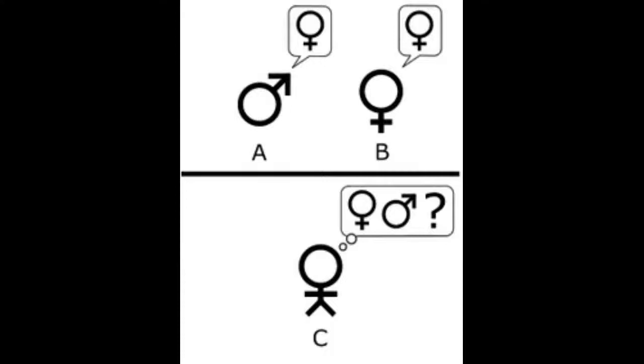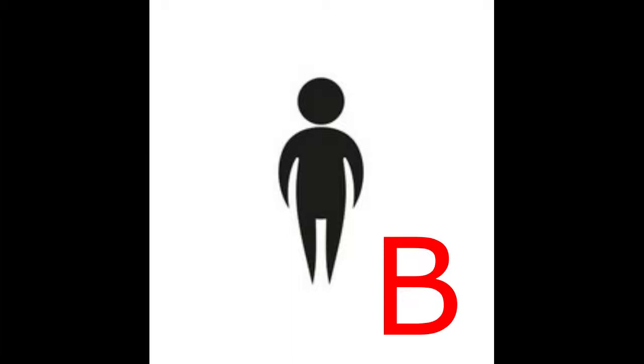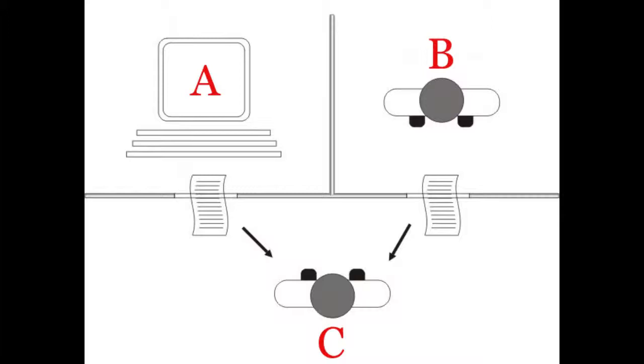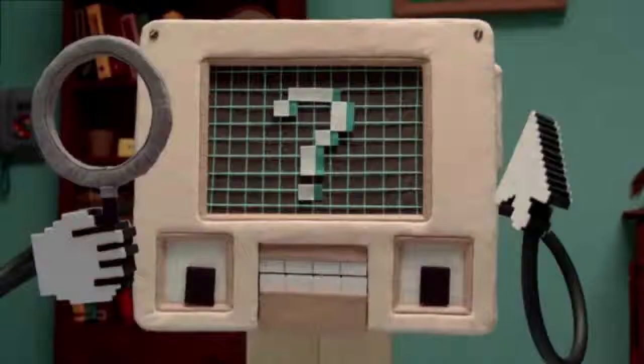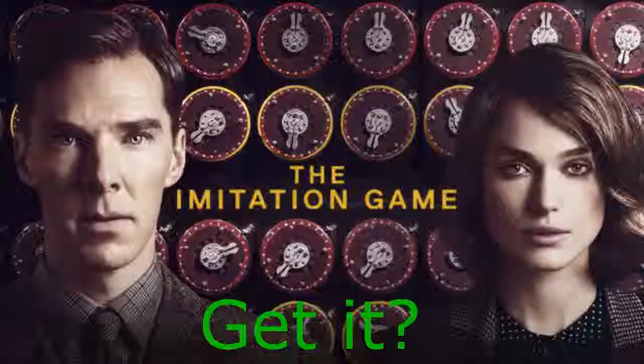Though the interrogator has nothing physical or verbal to base their claims on, they can ask either subject as many questions as they want. Person A will do everything in their power to trip up the interrogator, often by giving vague or confusing answers, while person B will help the interrogator make the right decision. In round two, person A is replaced by a machine, and the aim is to compare the machine's performance to that of the man in round one. If the machine was able to deceive the interrogator, then according to Alan Turing, it is capable of thought, as he believed imitation would not be possible without the ability to think.